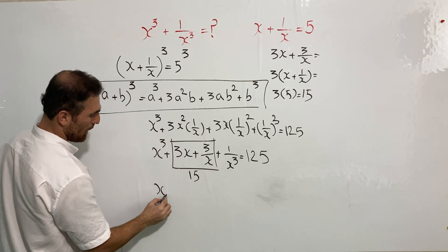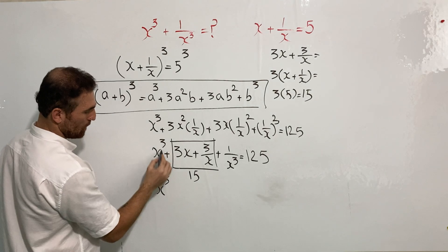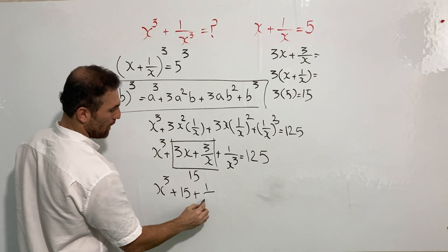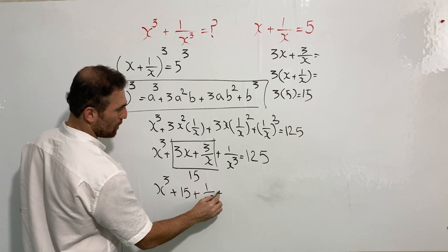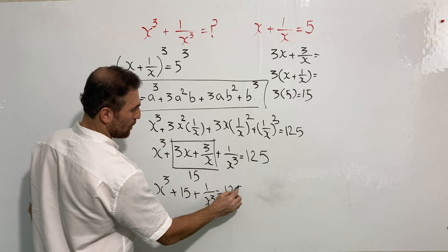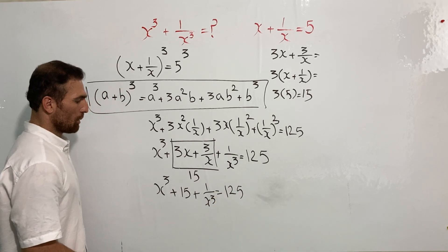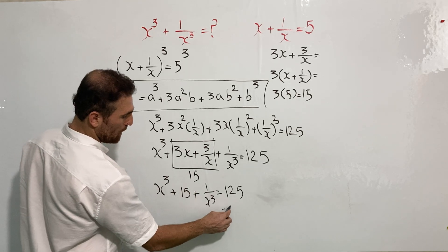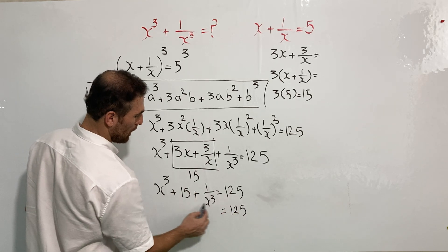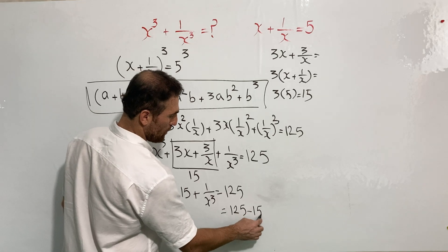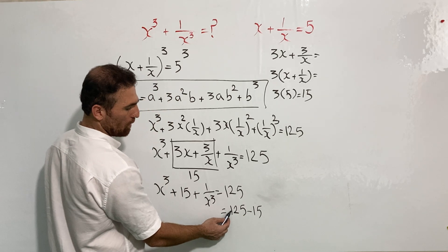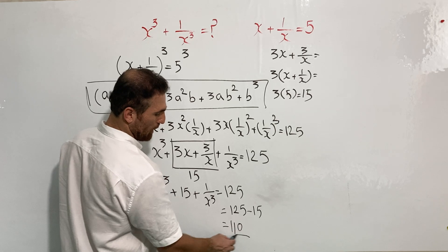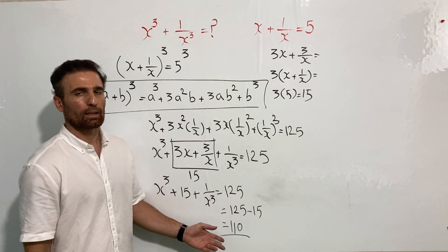So the value of 3x plus 3 over x is 15. Now we have x cube plus 15 plus one over x cube equals 125. Therefore, x cube plus one over x cube equals 125 minus 15, which is 110. And that is the correct answer.